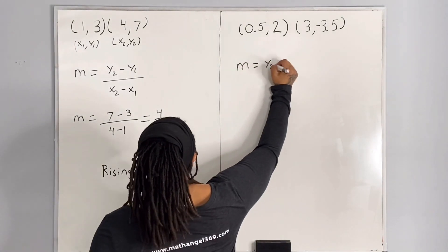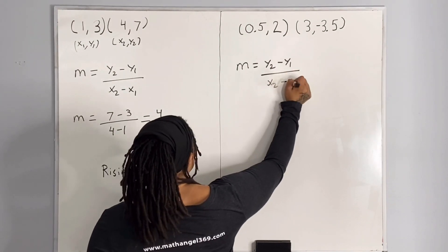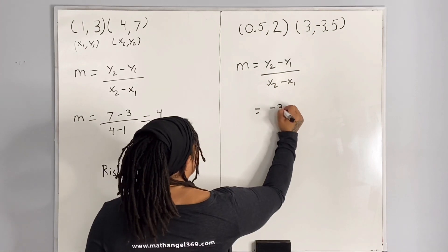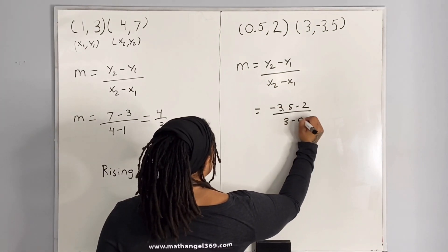m is equal to y2 minus y1 over x2 minus x1. And plugging it in, we get negative 3.5 minus 2 over 3 minus 0.5,